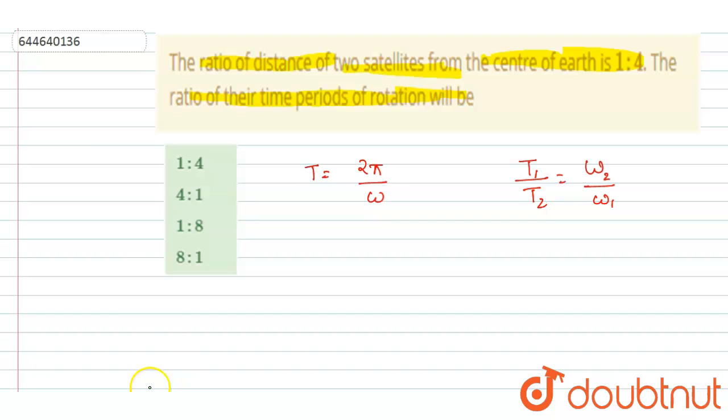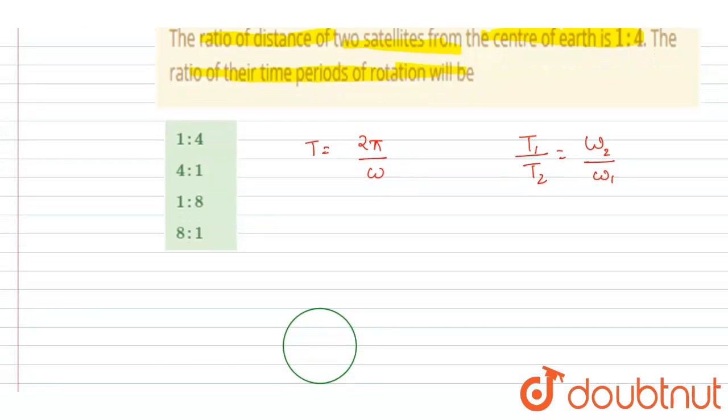So if you see here, let's take this as the earth. And at a distance of r, there is a satellite. So if you see, let's say the mass of the earth is this, and the mass of the satellite is this.